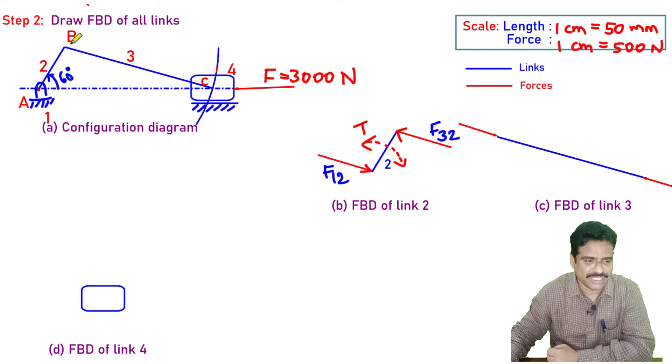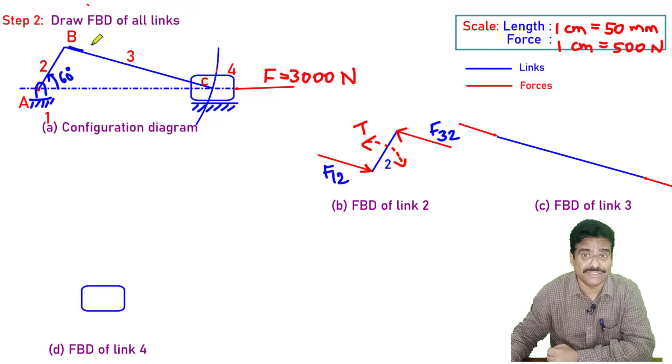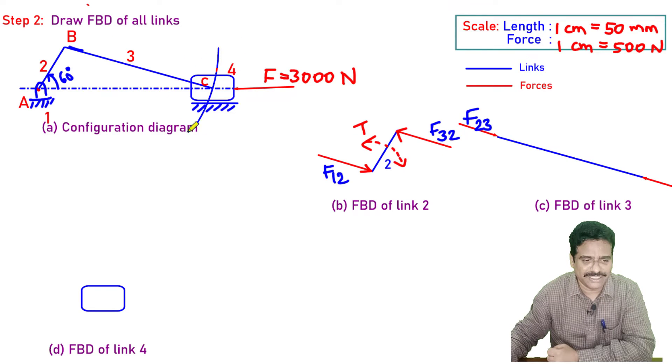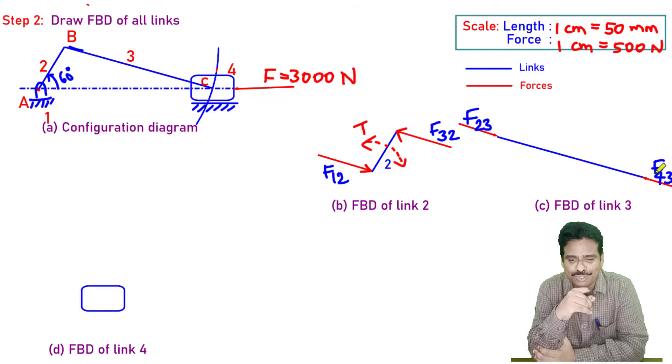What is this name? This is acting here, right? This is force exerted by link 2 on 3. This side we have link 4 exerts force on link 3. We could say link 3, that means connecting rod link, is a two force member.